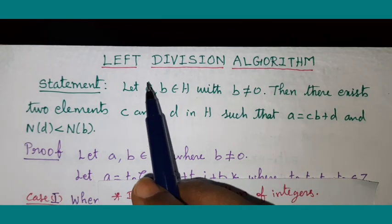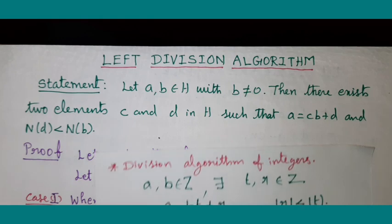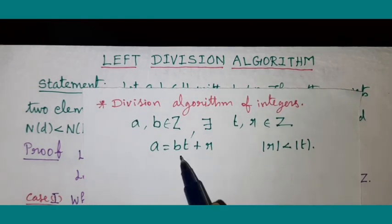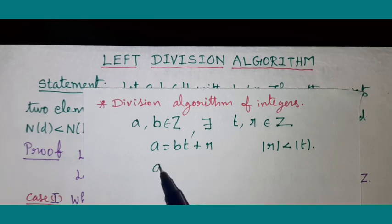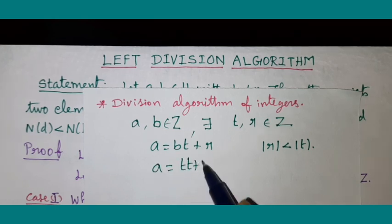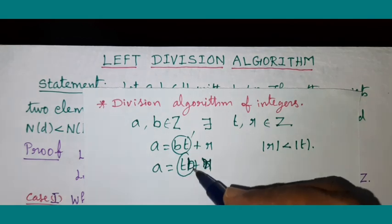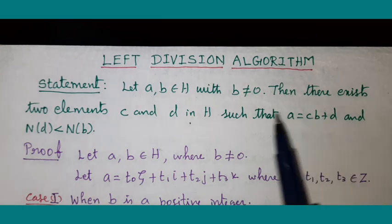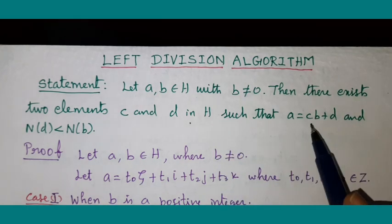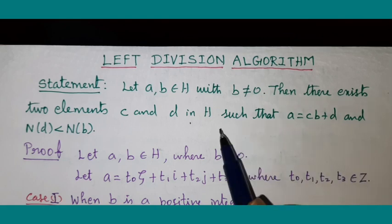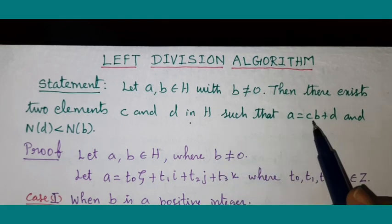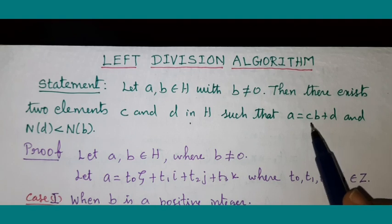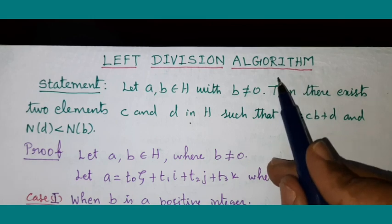But why is it called the left division algorithm? The reason is that in the case of the division algorithm for integers, A = Bt + R can also be written as Tb + R, because Bt is the same as tB — commutative property holds for integers, so both orderings are equivalent and it is called simply the division algorithm. Whereas here, because we are in the Hurwitz Ring, CB is not equal to BC. H does not satisfy the commutative property in general. Therefore, you cannot write CB as BC. That is why this theorem is called the left division algorithm.